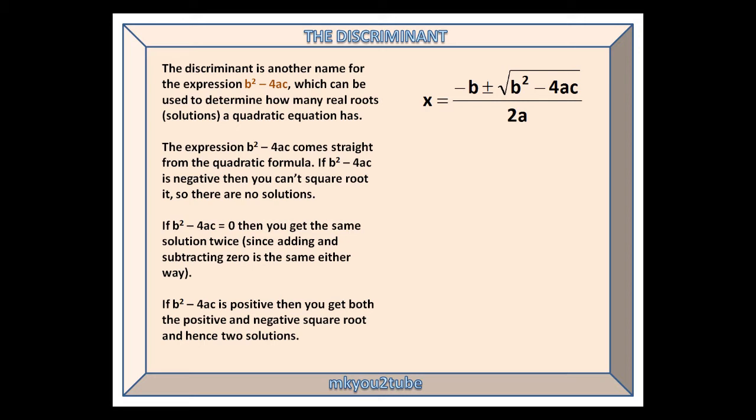And if b squared minus 4ac is positive, then you get both a positive and negative square root, and hence two solutions.